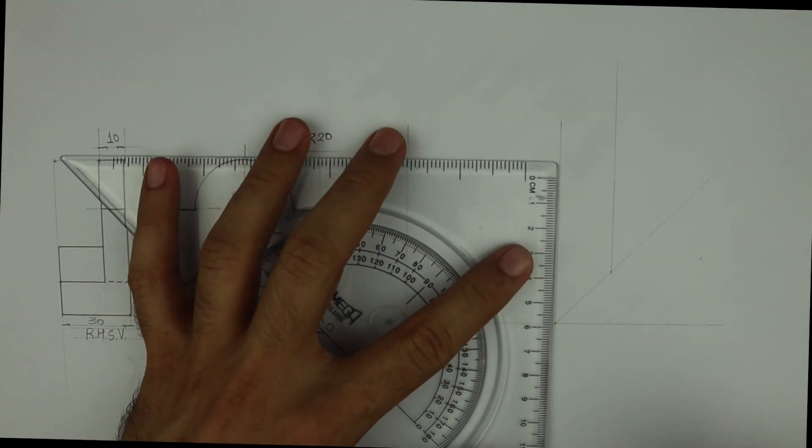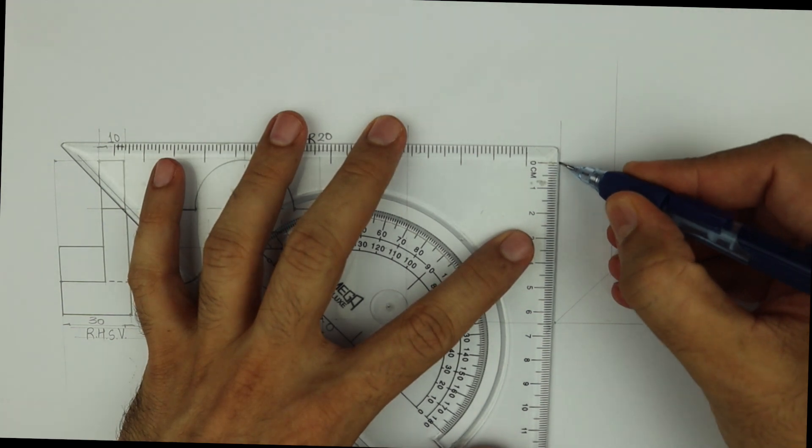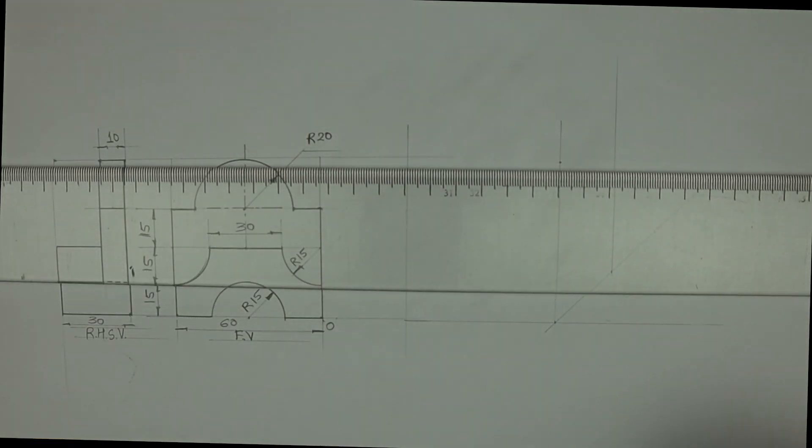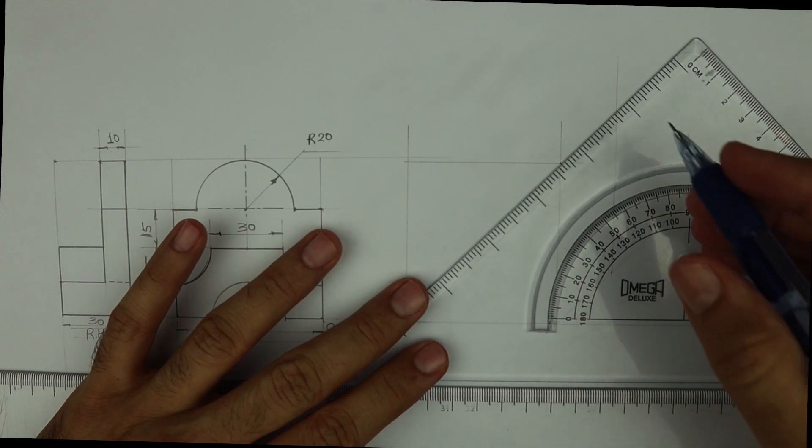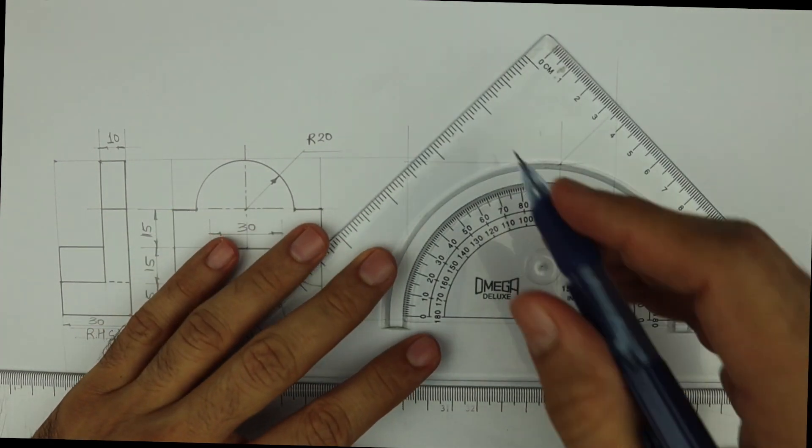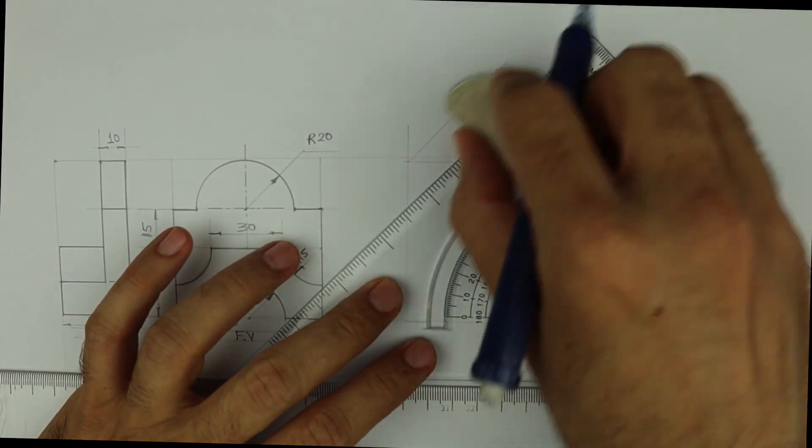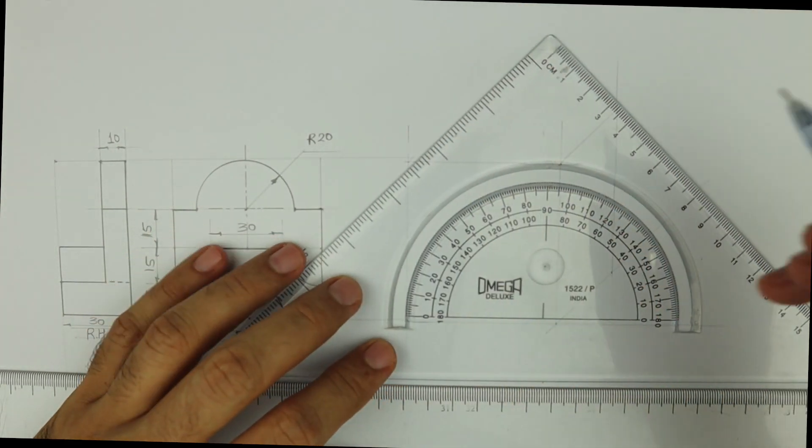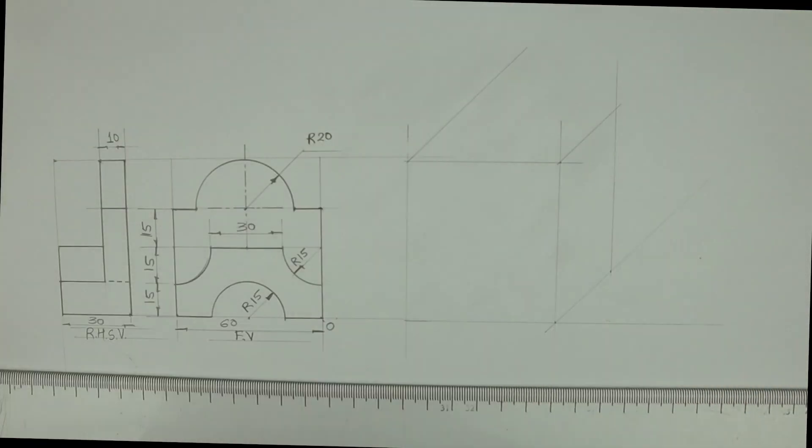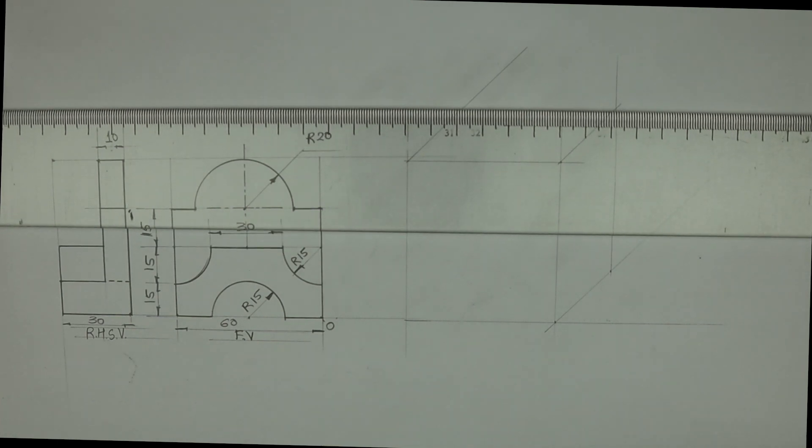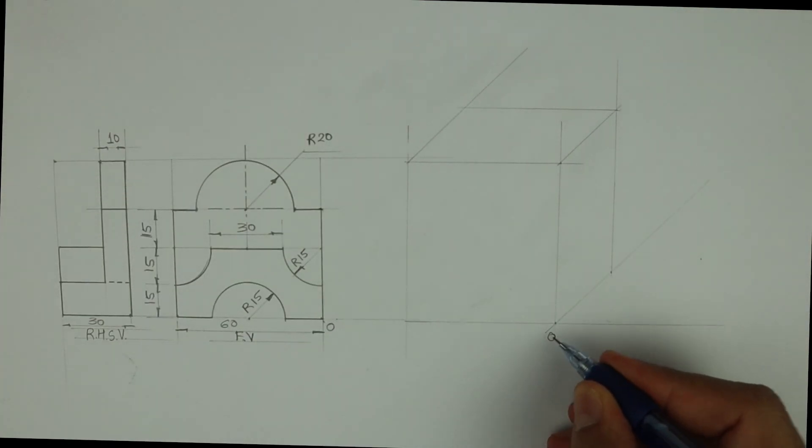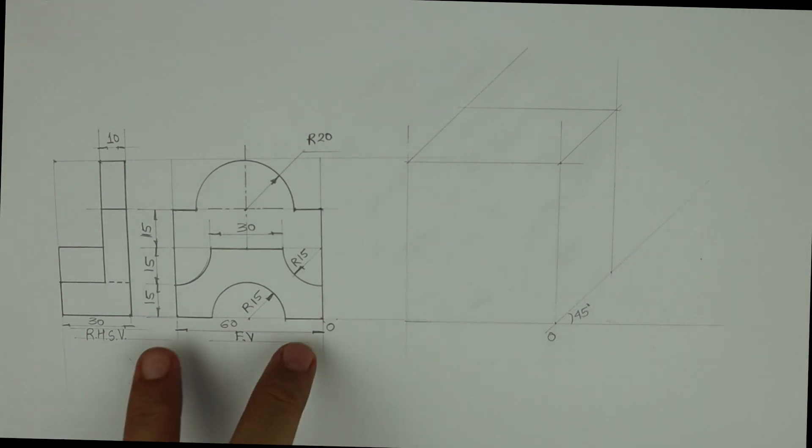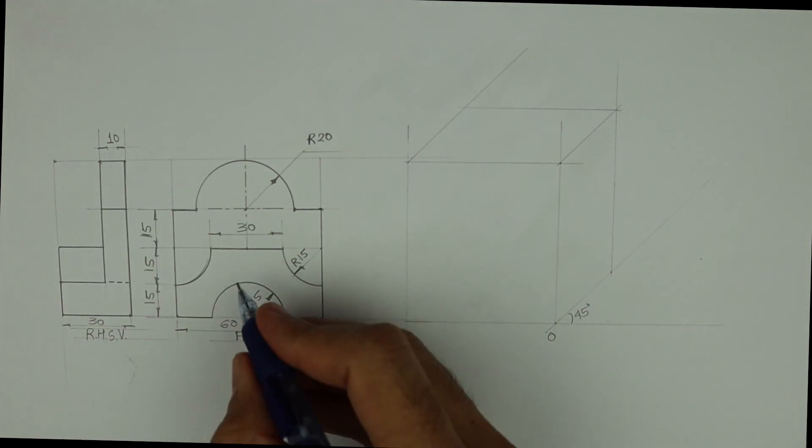Height is 65. Then complete the box. Now this is 60, height is 65, width is 30. So we are done with the box.